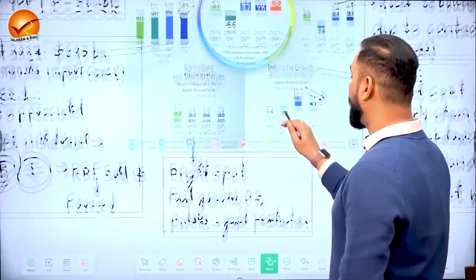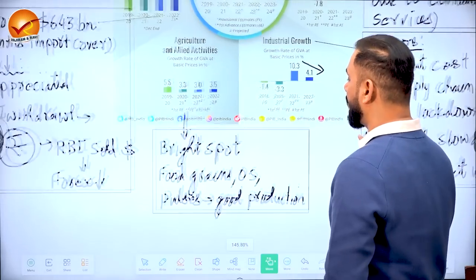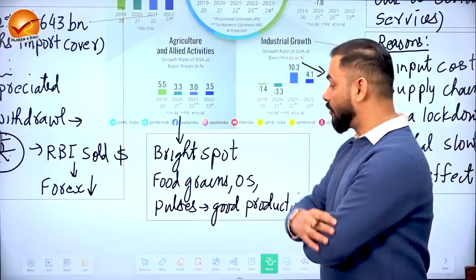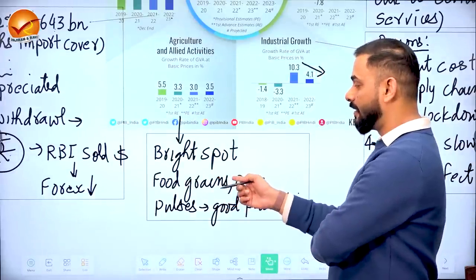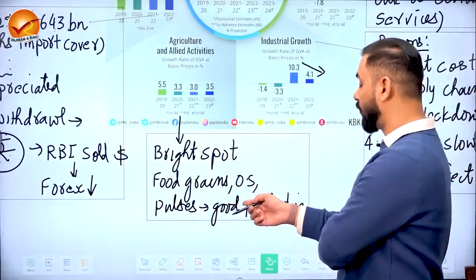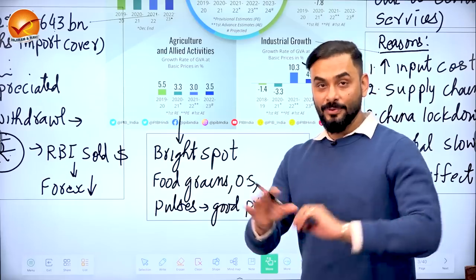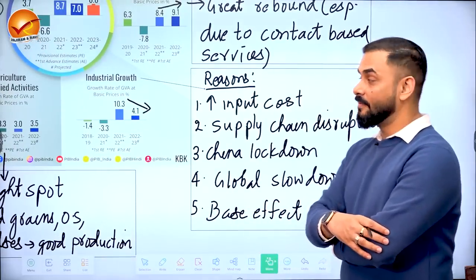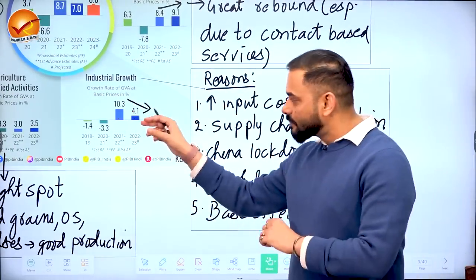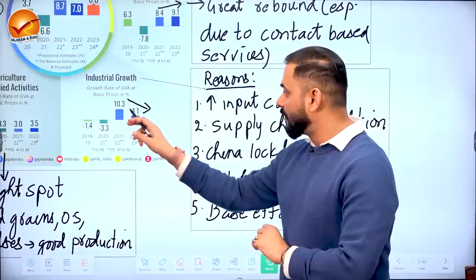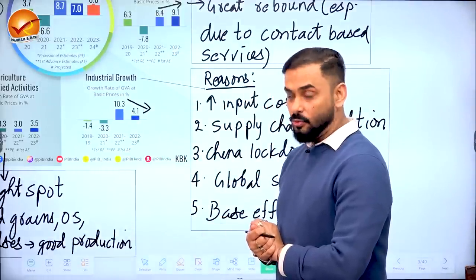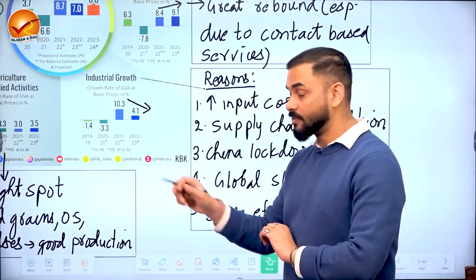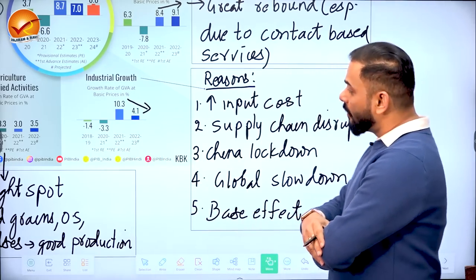Agriculture and allied sectors remain one of the brightest in India's economy — last year's production of food grains, oilseeds, and pulses was decent. Industrial growth, however, was 10.3% in 2021-22 but came down to a modest 4.1% in 2022-23.